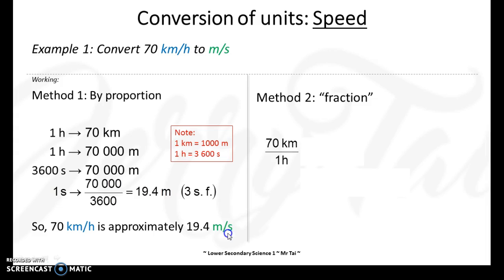Now, for the second method, you can express it in terms of fraction. 70 kilometers per hour as 70 over 1. And then, 70 kilometers convert to meters, hour convert to seconds. Then you get the answer. Remember to round off to 3 significant figures.